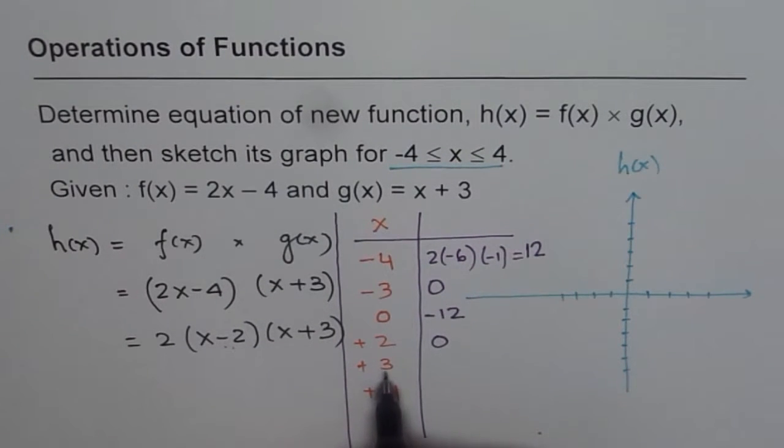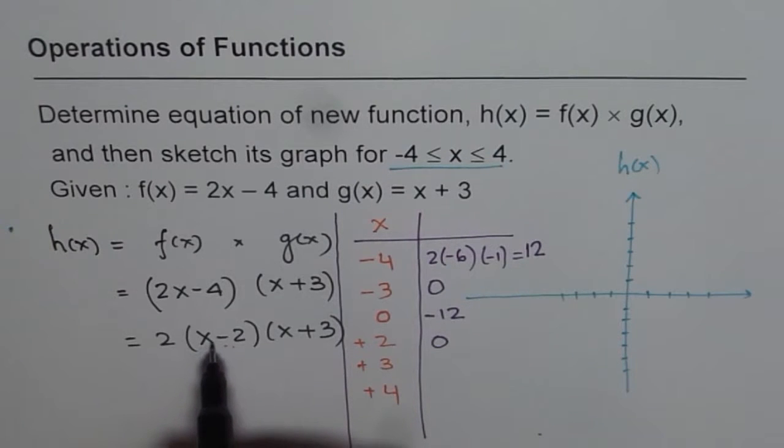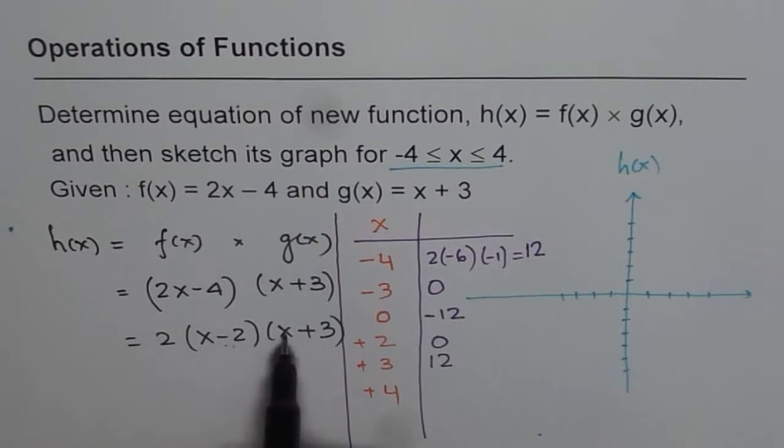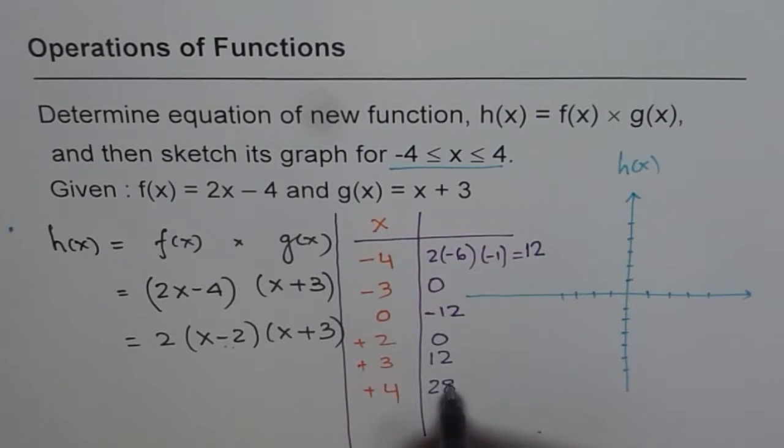For plus 3 it is 1 here. 2 times 1 is 2 and 3 plus 3 is 6. That gives us again a value of 12. And then for 4, 4 minus 2 is 2 and 4 plus 3 is 7. So 7 times 2 is 14, 14 times 2 is 28.